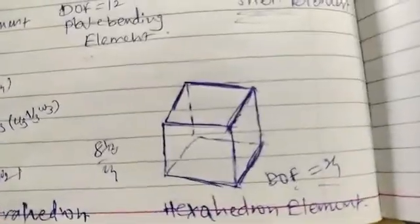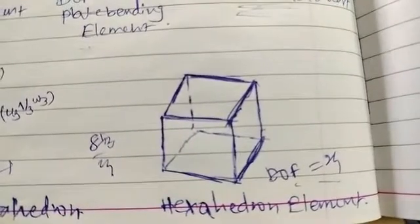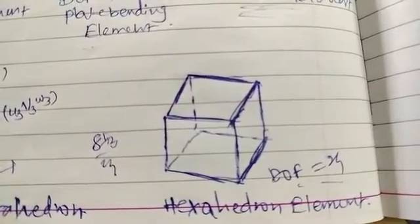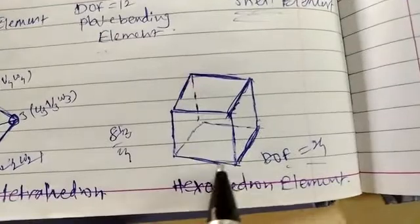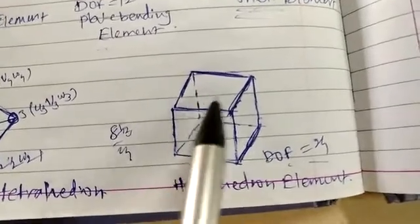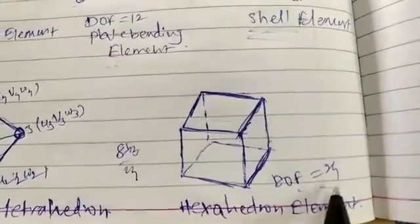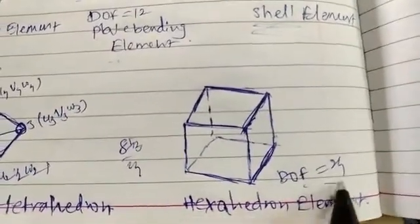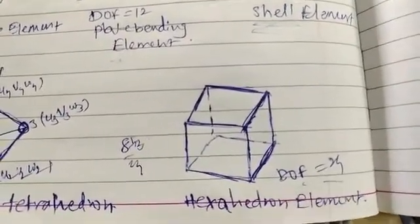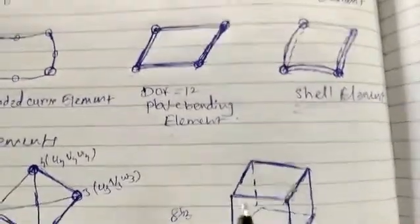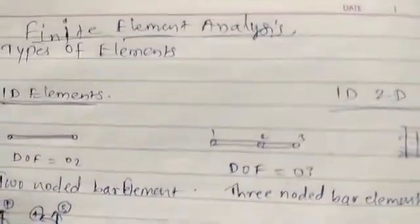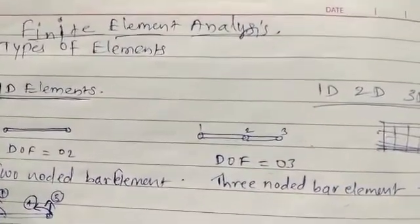The second example under 3D elements is the hexahedron. It has a total number of nodes equal to eight, so the degree of freedom will be twenty-four. These are the elements which are used in finite element analysis.